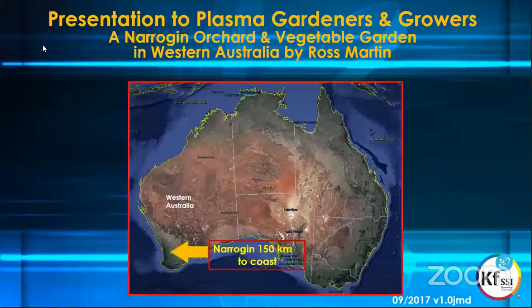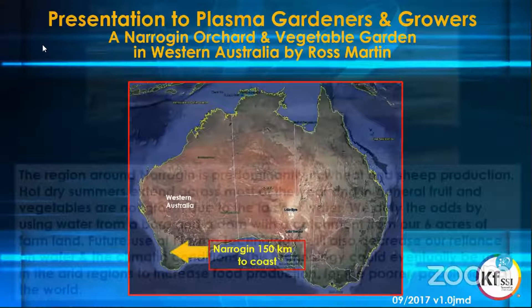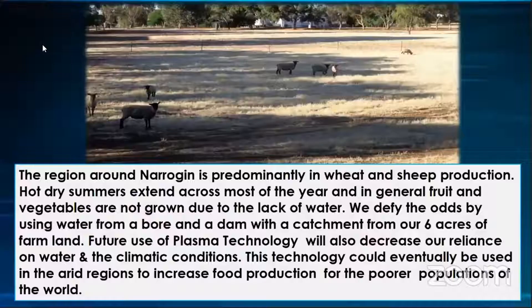He lives in Western Australia — Mr. Ross Martin — and he's done quite a nice lot of work. His region is mainly wheat and sheep production, and it's very hot, dry summers, which is across most of Australia.